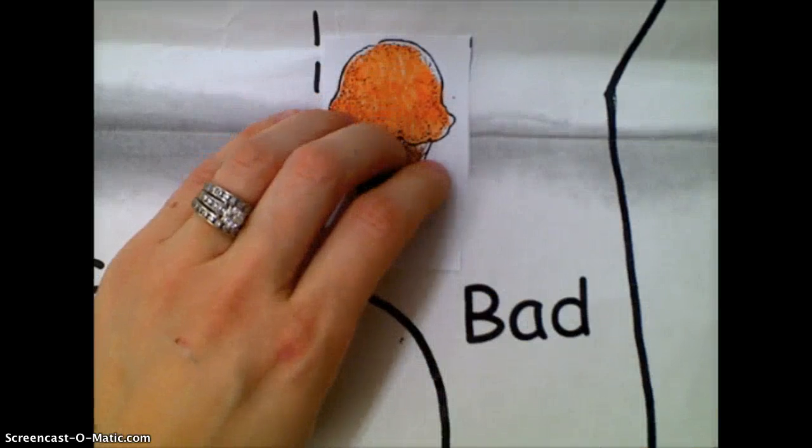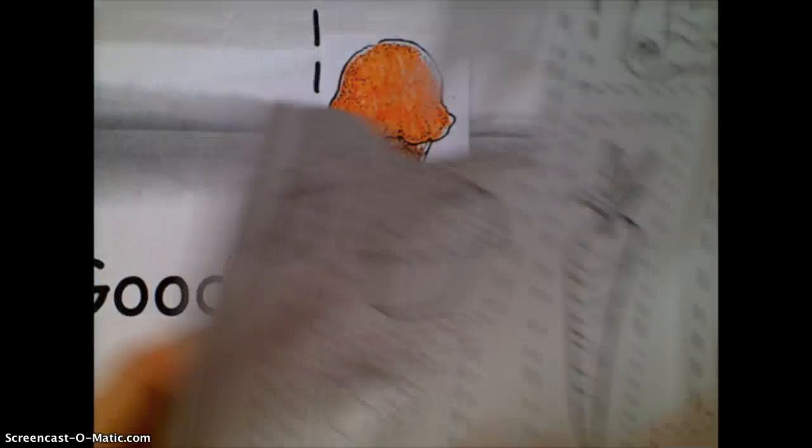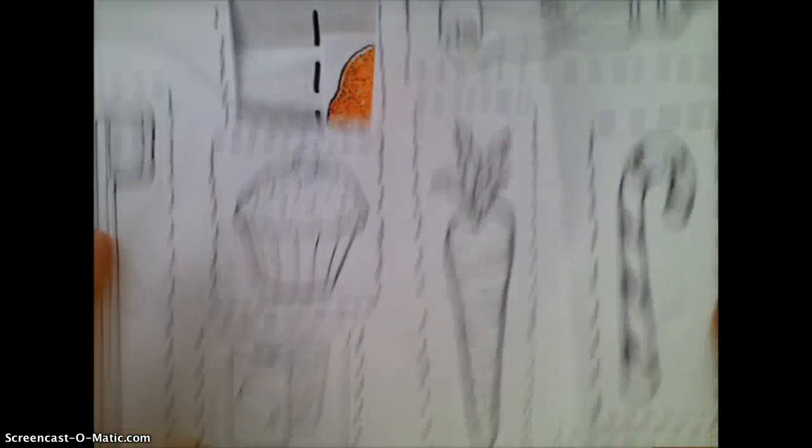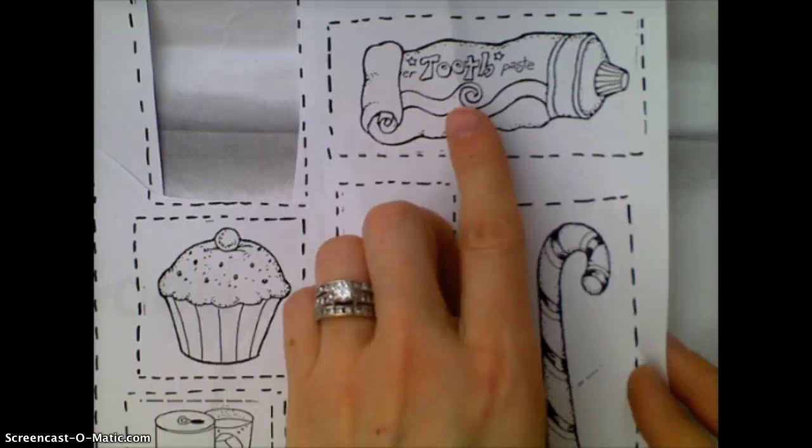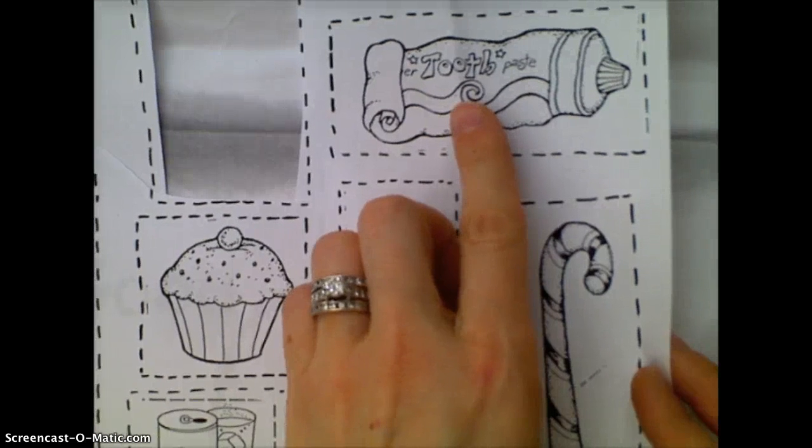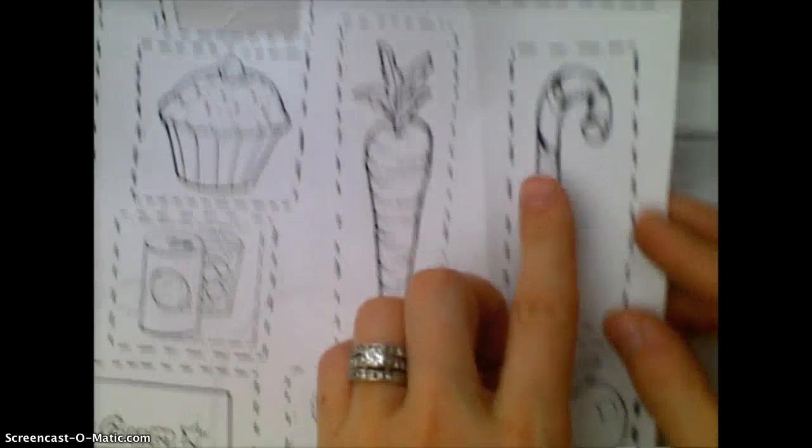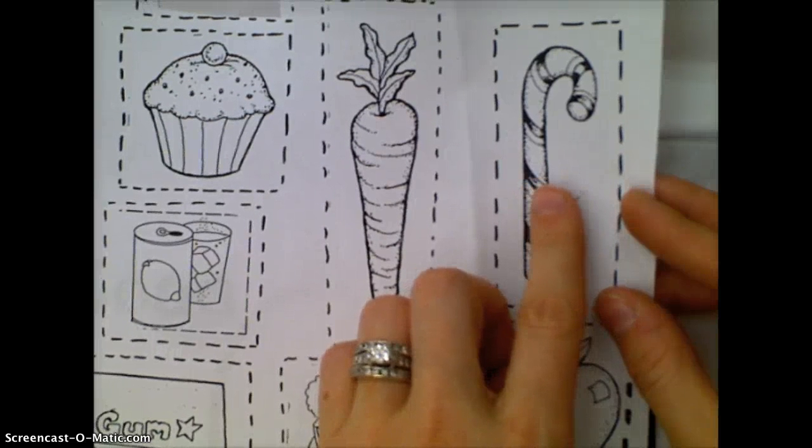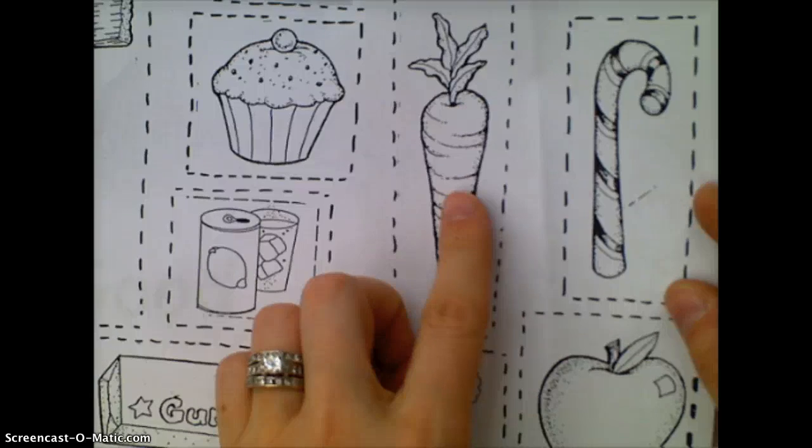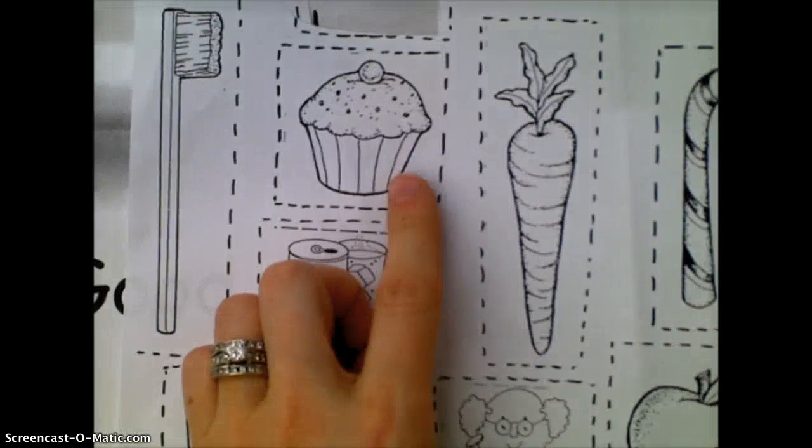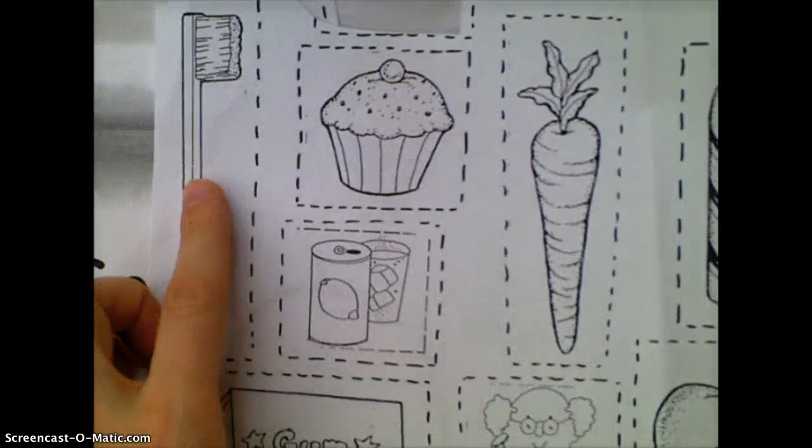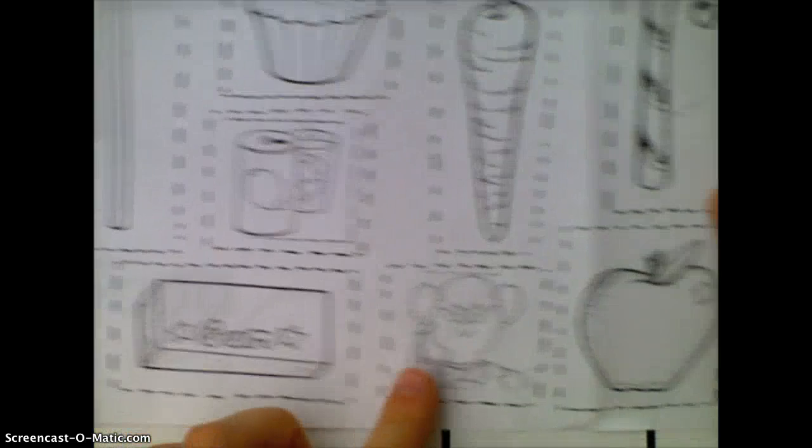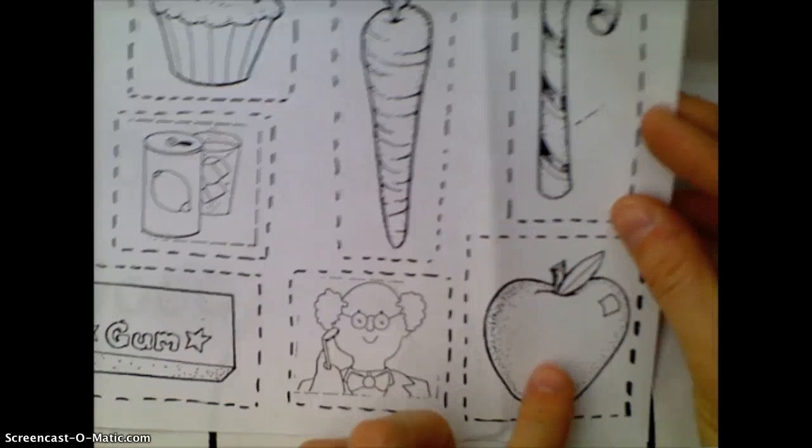Now you're going to continue with your sheets, coloring in the pictures, and then gluing them on. This is a picture of toothpaste. Is toothpaste good or bad for your teeth? This is a picture of a candy cane. Is this picture good or bad for your teeth? Here's a carrot, a cupcake, your toothbrush, soda, gum, the dentist, and an apple.